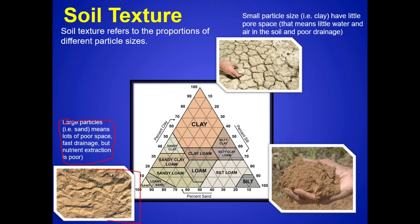With sand, drainage is better but nutrient extraction is more difficult. You're kind of getting to a Goldilocks situation — clay is too fine, sand is too coarse, but silt is just right. Silt is kind of like the good garden soil — it's usually pretty silty.